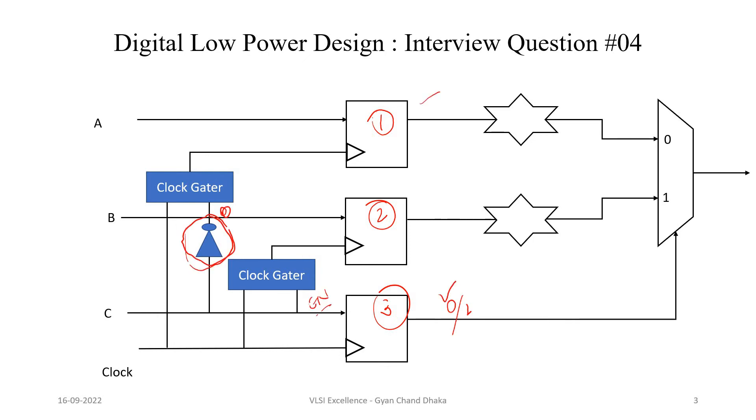So whenever the output of flip-flop 3 is 0, that means the output of flip-flop 1 will be selected by the multiplexer. And in that particular case, we have to ungate the clock for flip-flop 1 and we have to gate the clock for our flip-flop 2. So assuming that it is an active high clock gater circuit, if our enable signal is low, that means the clock will be gated for our flip-flop 2.